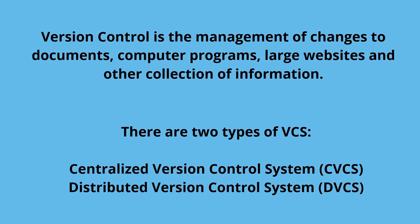Generally there are two types of version control tools: one is a centralized version control system and another is a distributed version control system. We will see the differences and advantages or disadvantages. Let's start with the first one — centralized version control system.